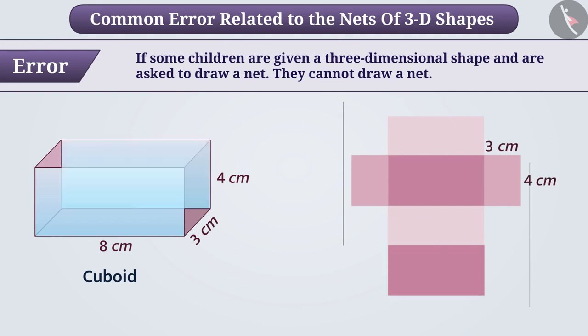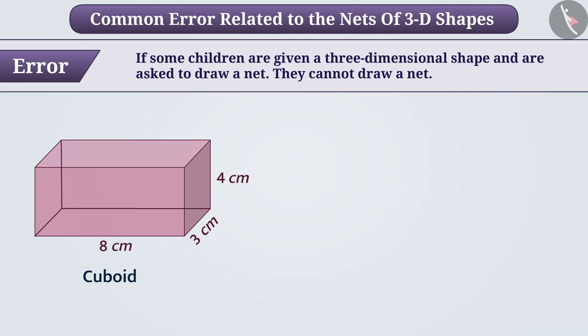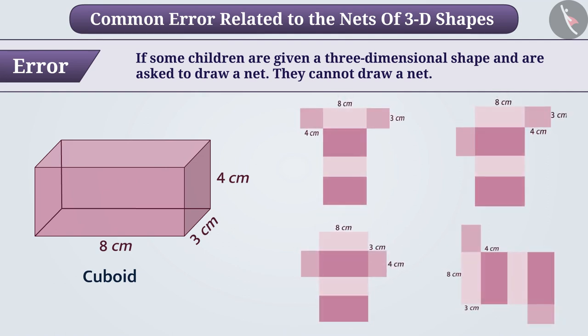It is not necessary that a solid has only one net. Rather, the nets may also vary. Just like a cuboid can have different nets. Stop the video and imagine how they will form a cuboid.